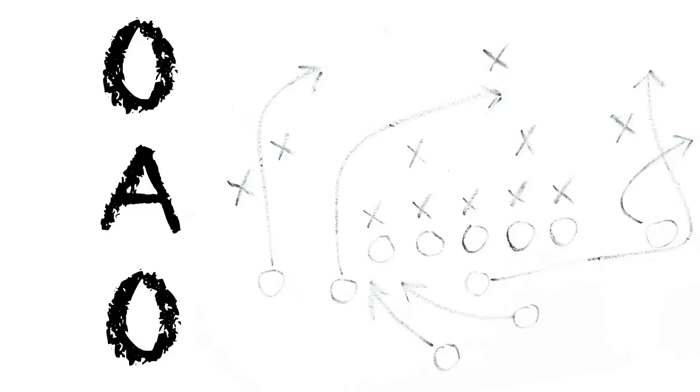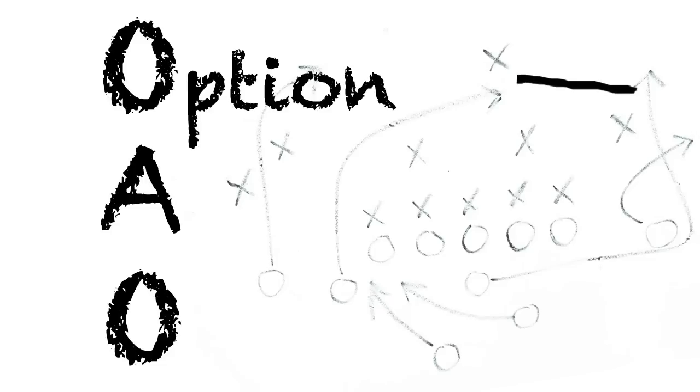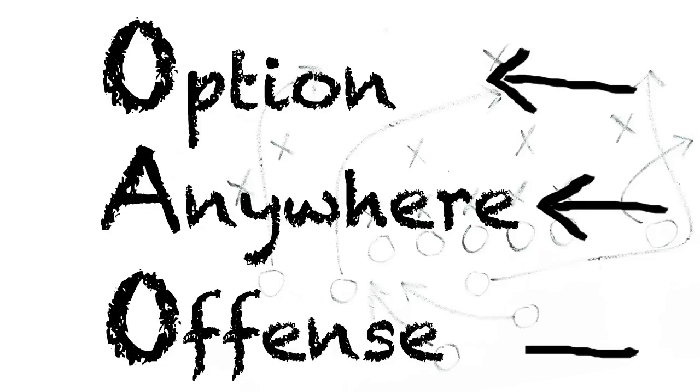All right, team, when we're at the goal line, ready to run that print job right up the middle to a printer in an ITAP computer lab, we're going to use OAO — Option Anywhere Offense. We're going to print that job from anywhere, anytime.